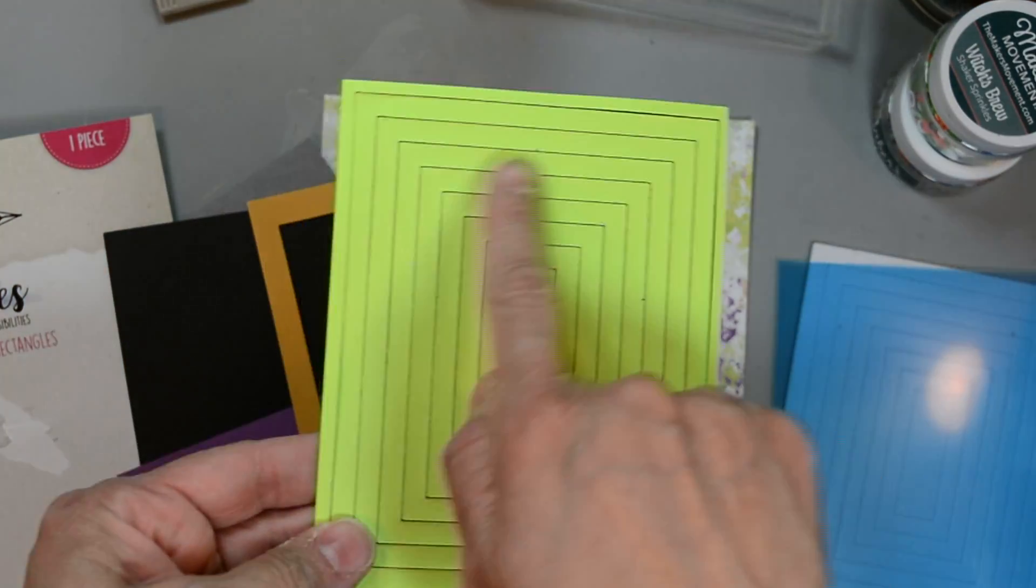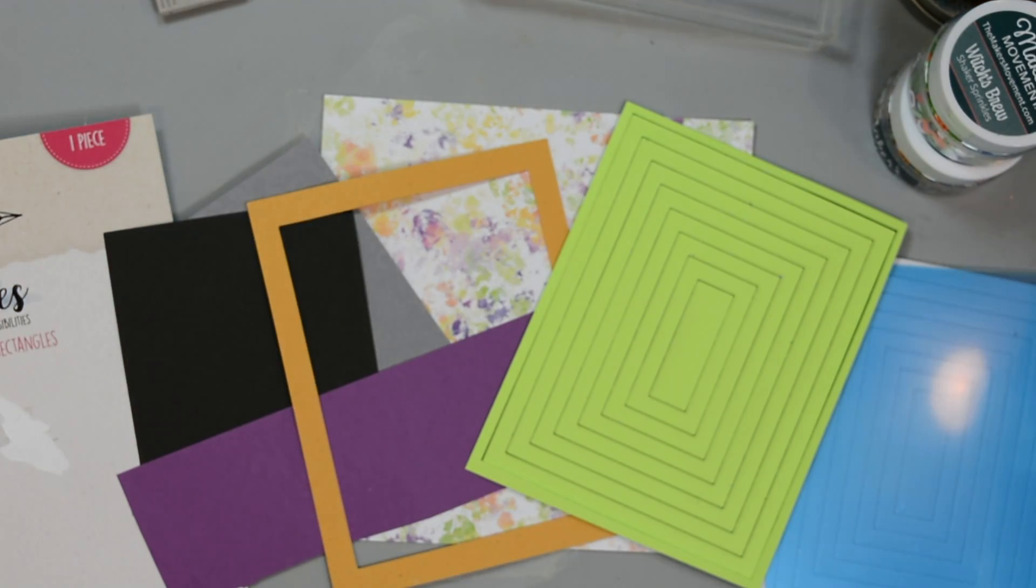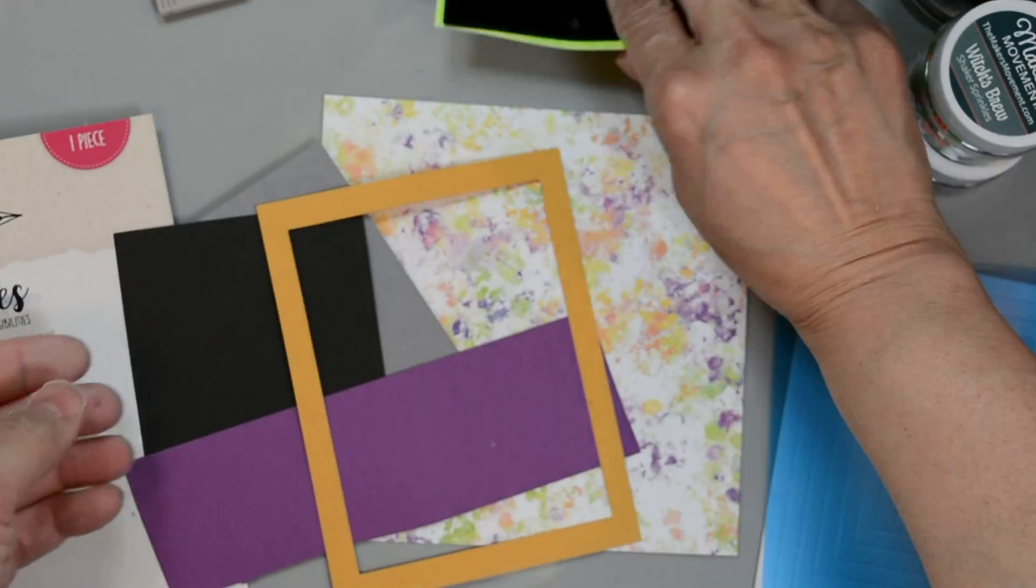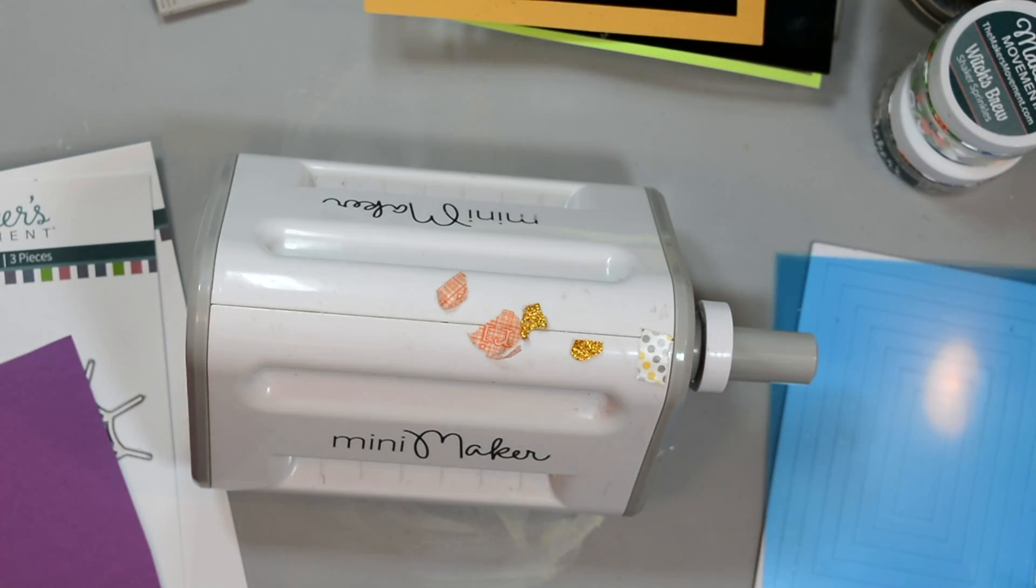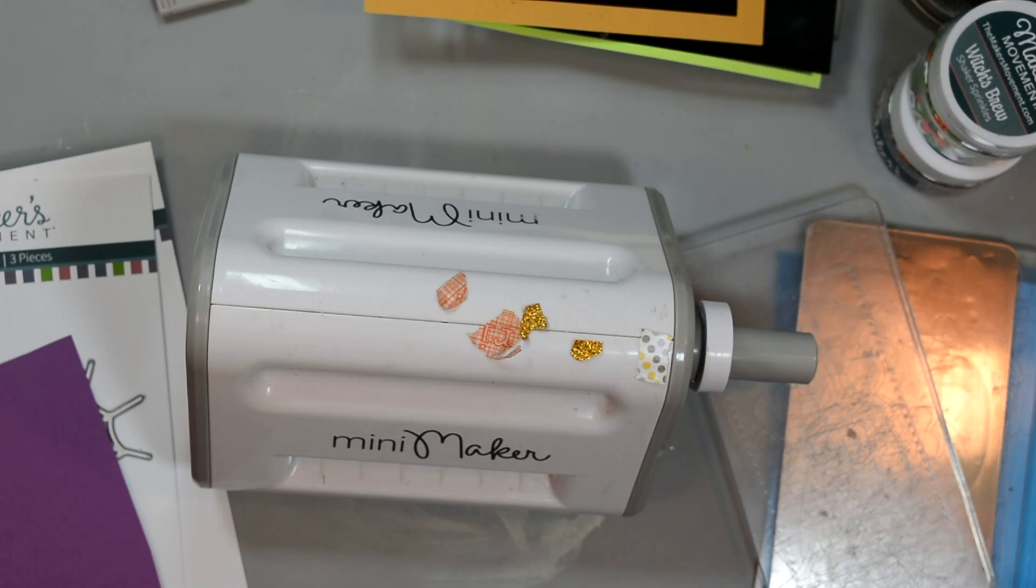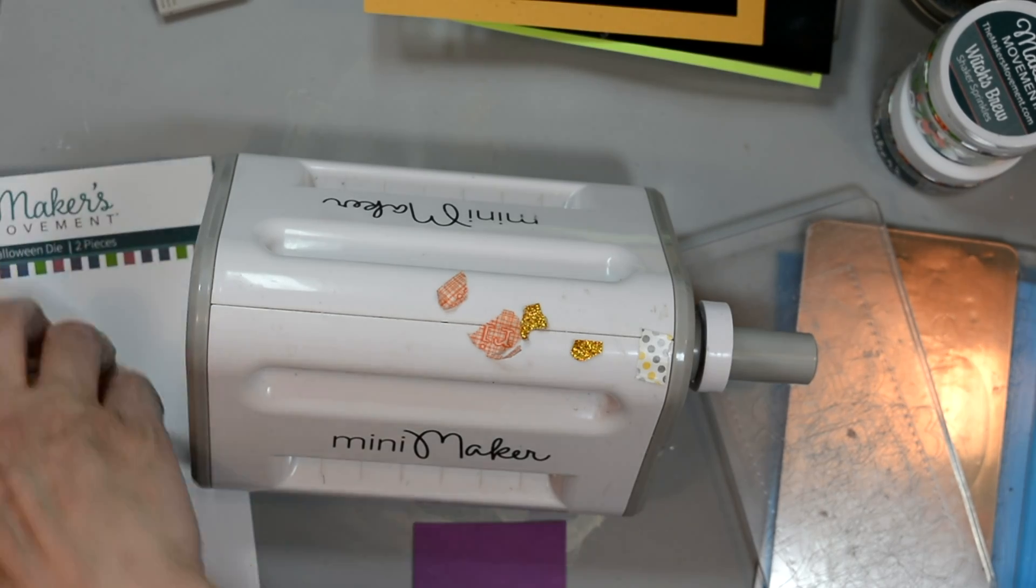First we're going to start by cutting out our little green frames and that's what I used the Versa dies for, and I used it in my crossover edge big heavy duty die cutting machine that I keep off the side of my desk. Now we're going to bring in our mini maker to cut out the rest of our pieces.